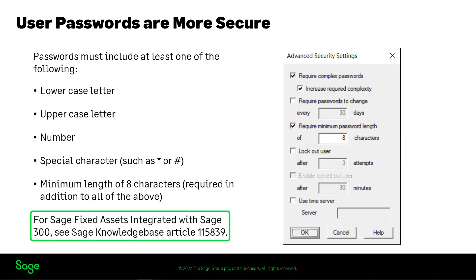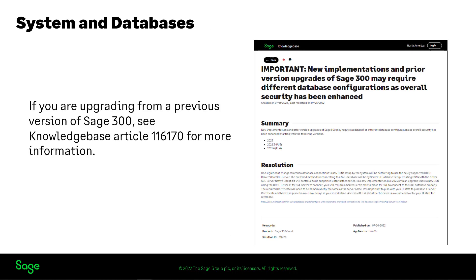Also, if you require complex passwords and you use Sage Fixed Assets integrated with Sage 300, you must update your system as explained in Sage Knowledge Base Article 115839. Technical upgrades and enhancements have been made to improve overall security for Sage 300. If you are upgrading from a previous version of Sage 300, you may need to make some changes to your system setup. For more information, see Knowledge Base Article 116170.